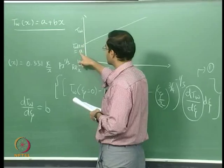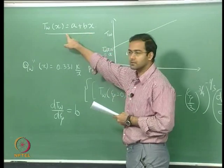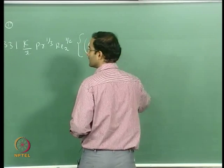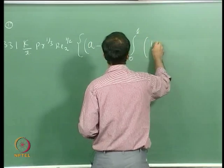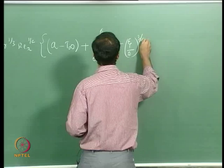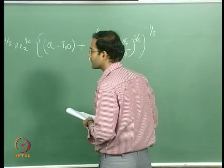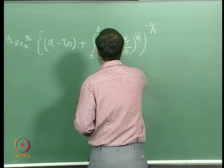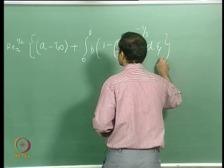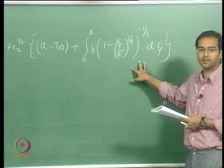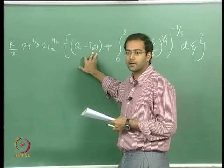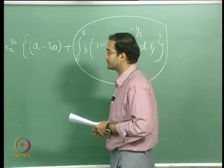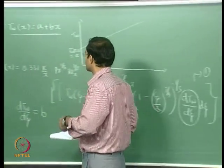Substituting T_wall at ζ=0 as a, the expression becomes: 0.331(k/x) PR^(1/3) Re_x^(1/2) × [a − T∞ + integral from 0 to x of (1 − ζ/x)^(3/4)^(−1/3) × B dζ]. Now all we need is to evaluate this integral, since T∞, a, and B are all known constants.